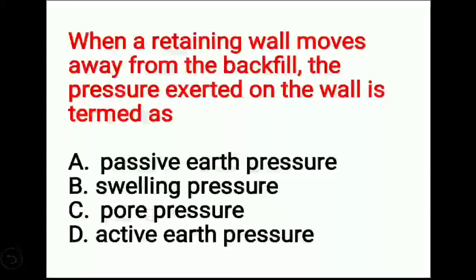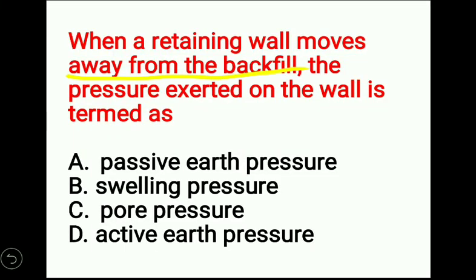The first question: when a retaining wall moves away from the backfill, the pressure exerted on the wall is termed as? The four options are: option A - passive earth pressure, option B - swelling pressure, option C - pore pressure, option D - active earth pressure. We will see each option one by one.